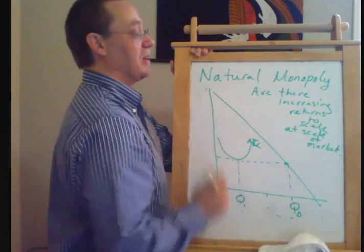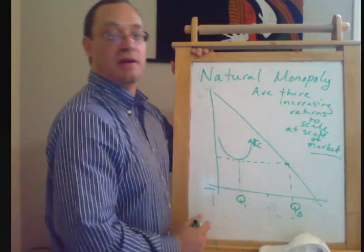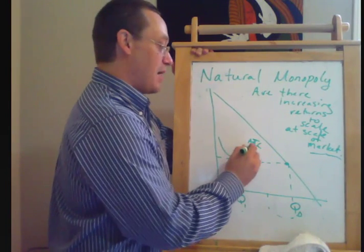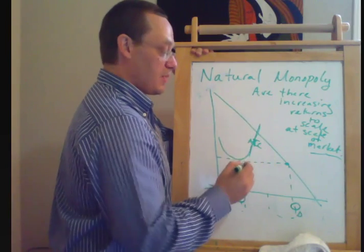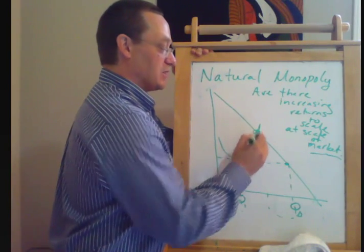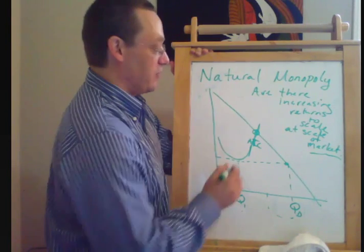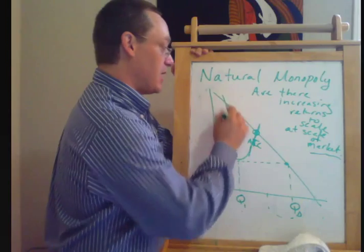So this market, the scale of this market can support three firms if cost curves are like that. So if we had a monopolist in this market and they were trying to serve the market over here, that would be inefficient. It would be an inefficient or unnatural monopoly.